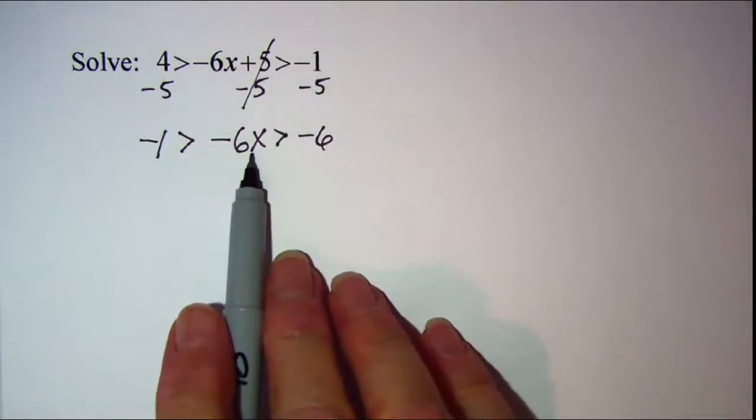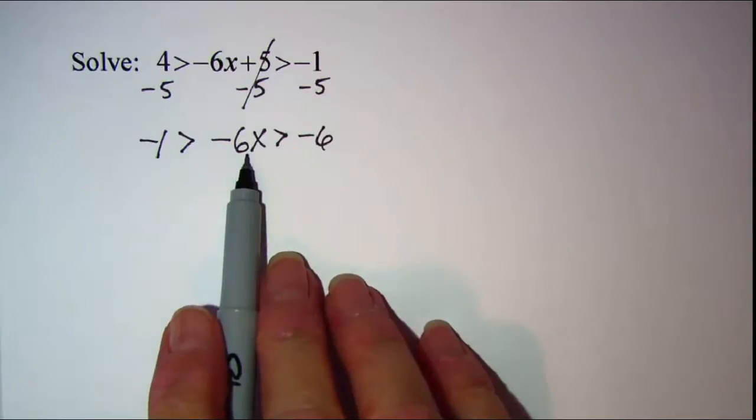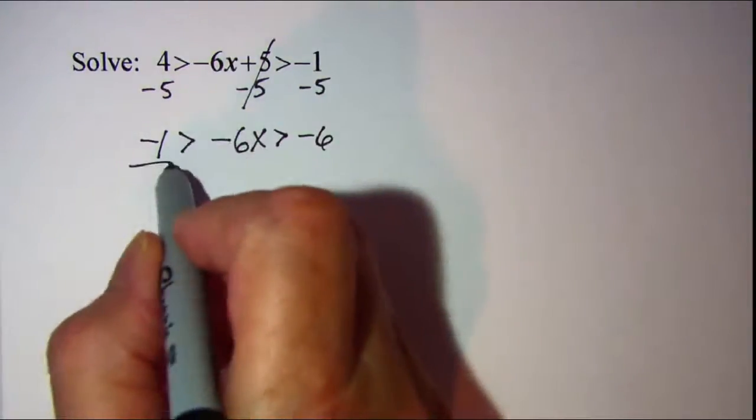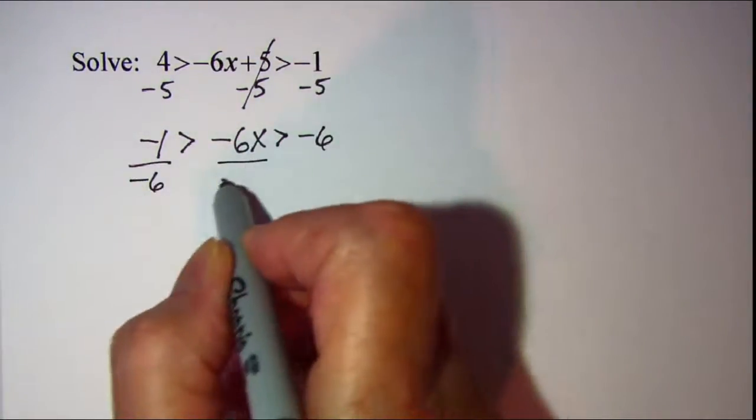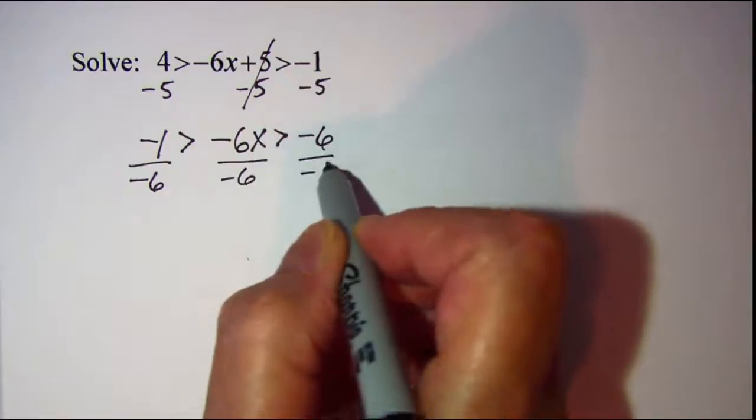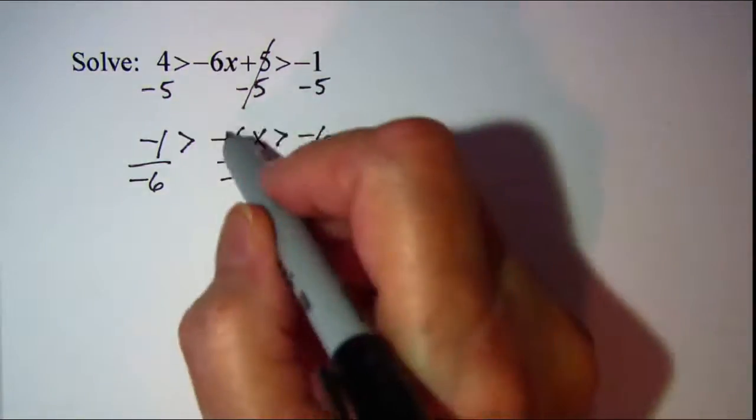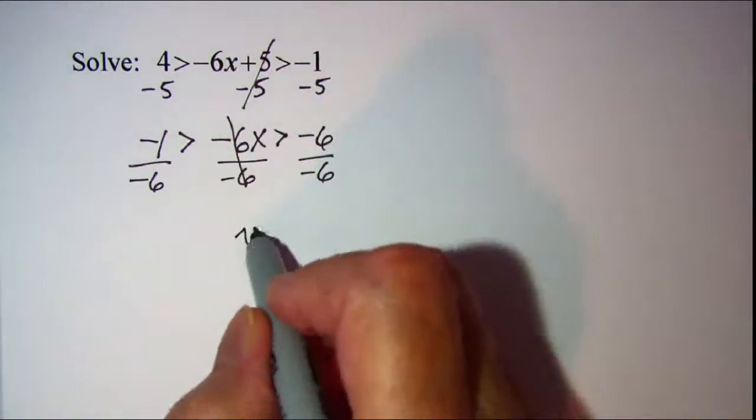Now to isolate my x, I need to divide all three parts by negative six. When I do that, these will cancel, and I'll have x in the middle.